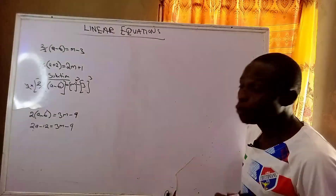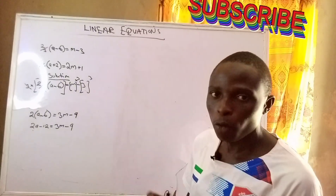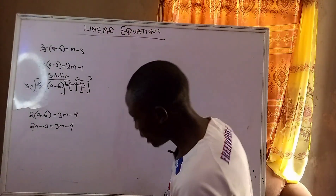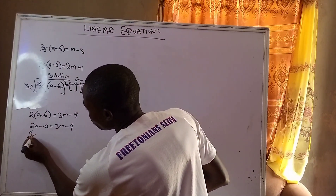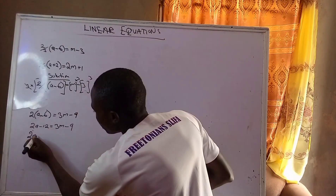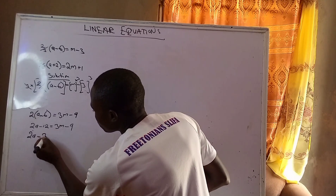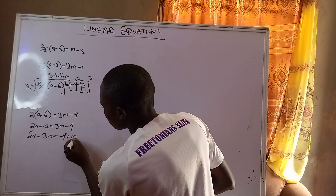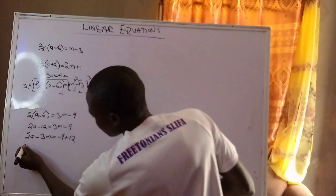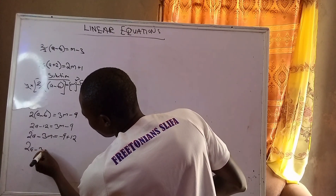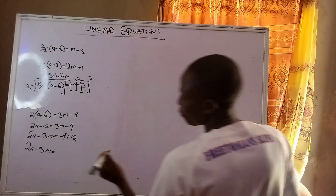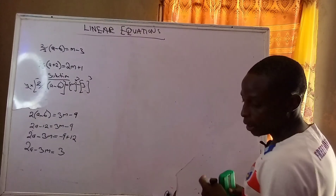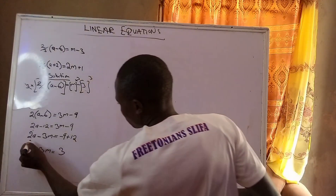Arriving at this stage, we are now going to rearrange and collect like terms. 2a — I don't have any other term in a — then the other variable is 3m. Rearranging: 2a minus 3m equals negative 9 plus 12. Negative 9 plus 12 is the same as 12 minus 9, which equals 3. This is my first equation.